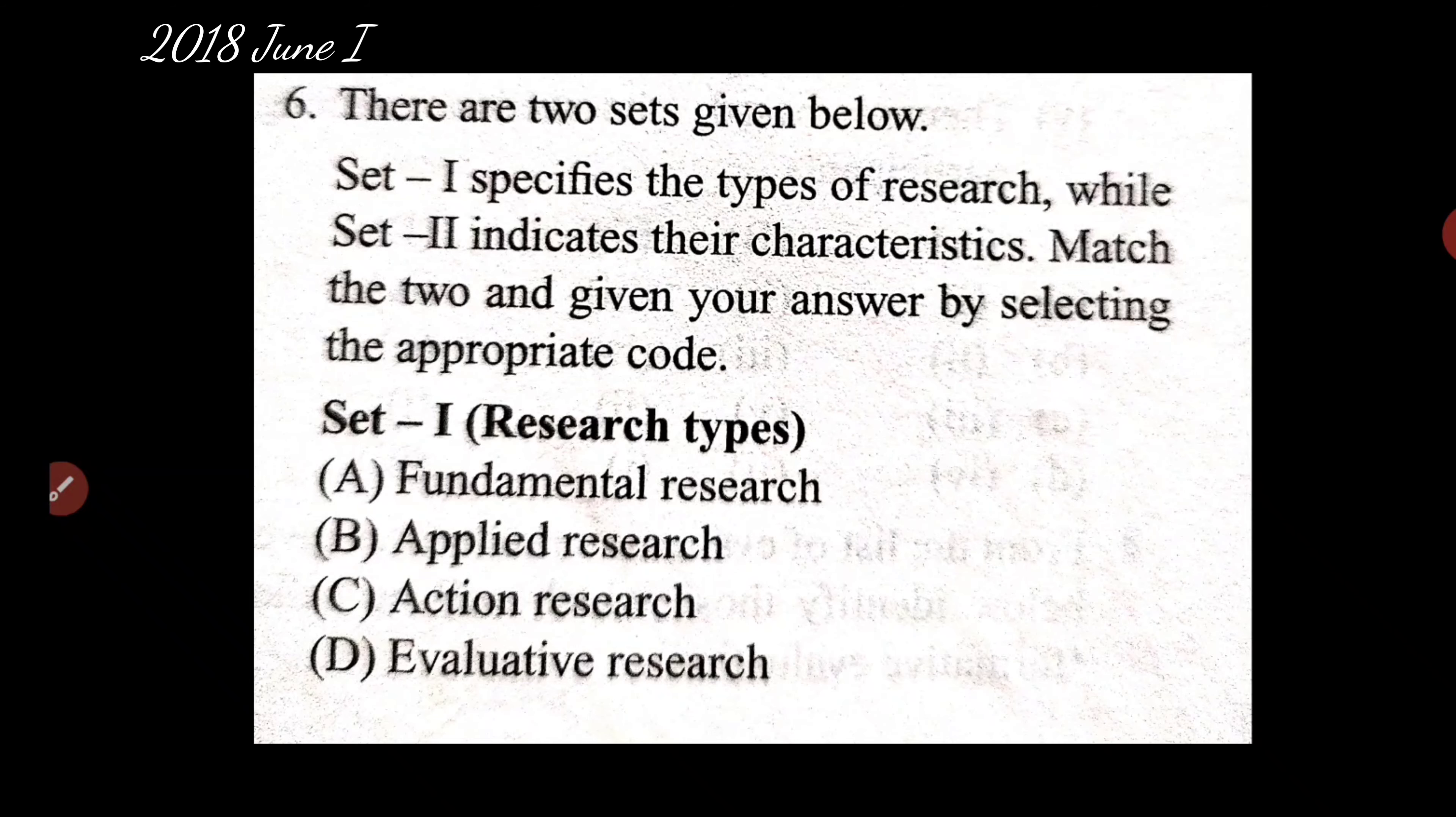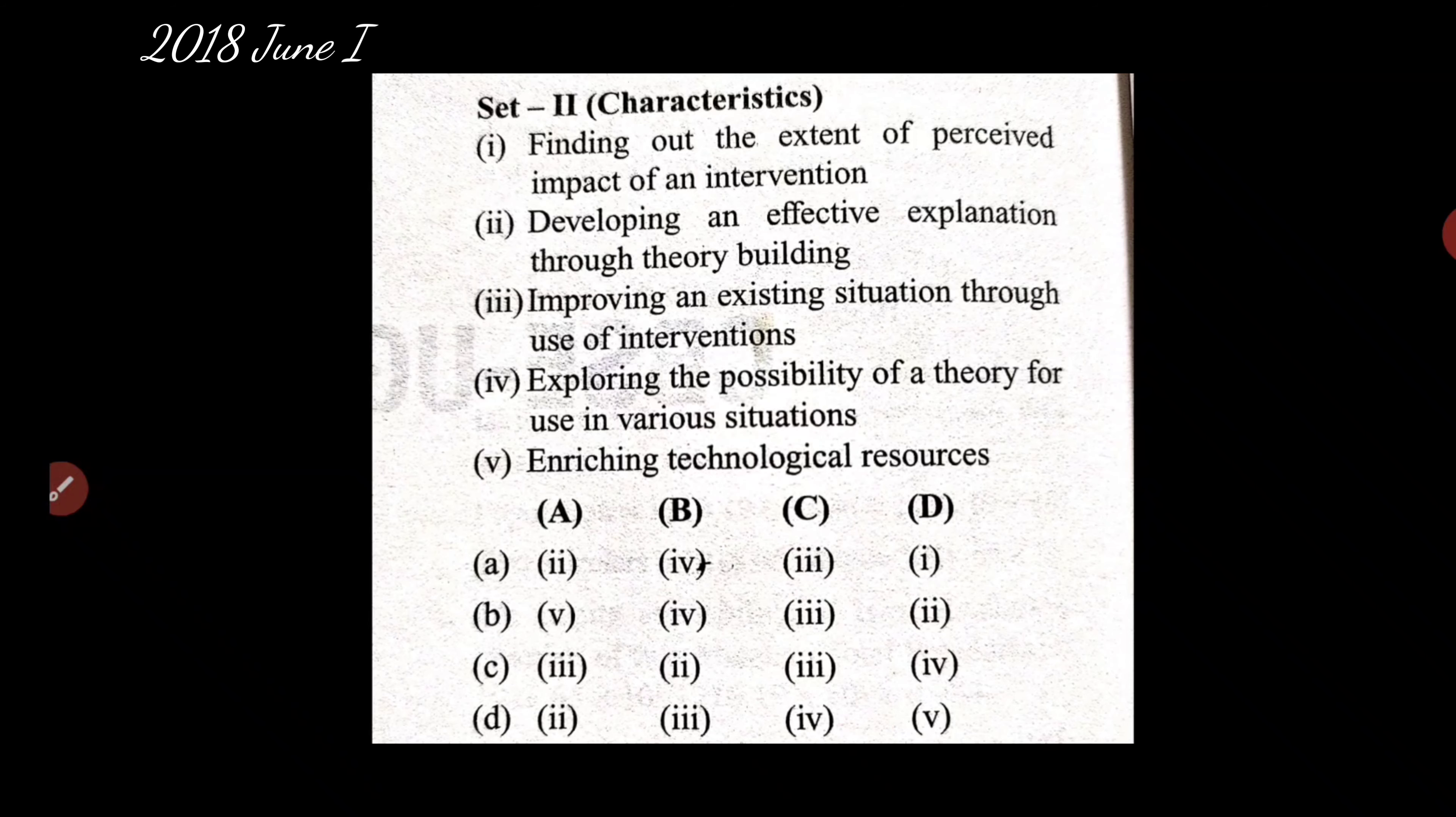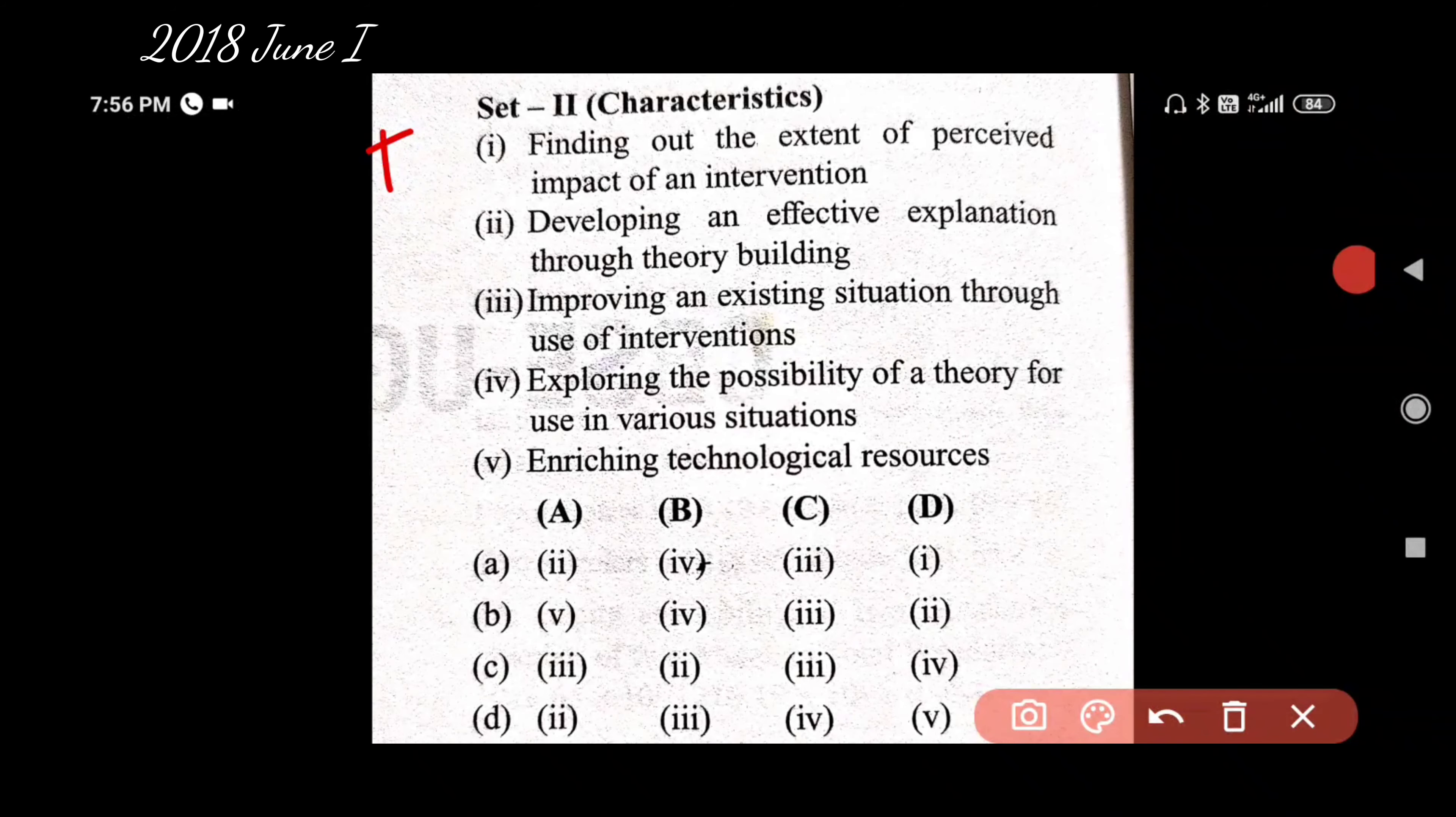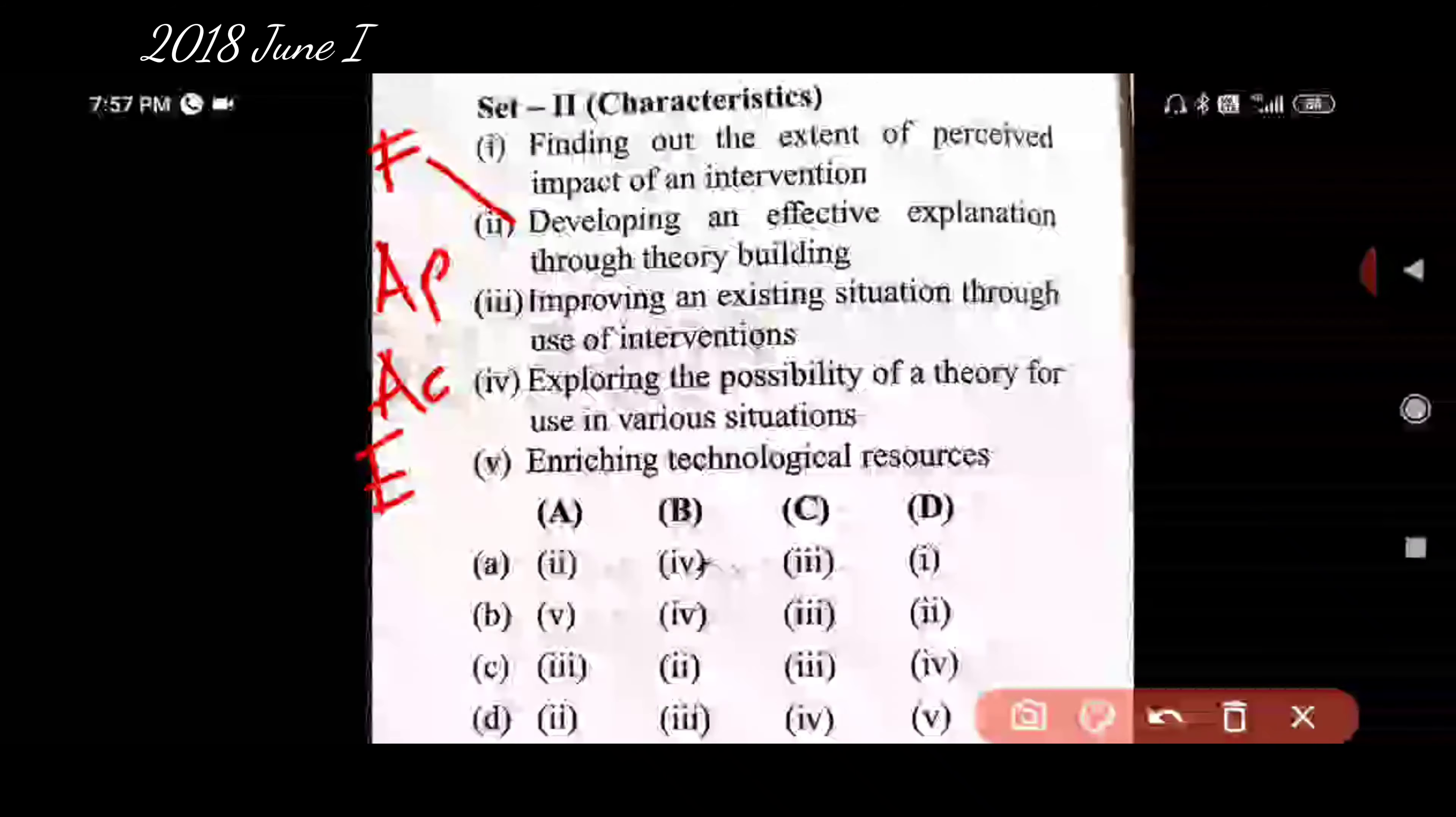This is match the following. Set one is research types and then set two is characteristics. Fundamental research - A - and then B was applied research, C was action research, and D was evaluative research. So we'll do it here. Fundamental research is theory building, right? So it's two. Applied research is using the basic theory for application in various situations, so it will be four.